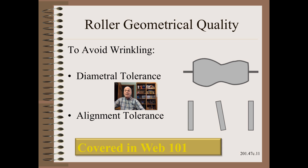When the web gets thinner, roller cylindricity and alignment precisions may need to be improved to keep wrinkling and other troubles at tolerable levels. Perhaps now you might need to re-grind nip rollers more frequently, or perform a precision optical alignment, when in the past a pi tape and level might have been best practice in your plant.